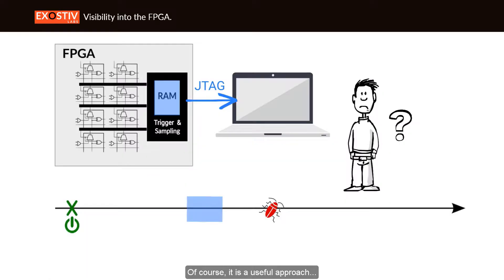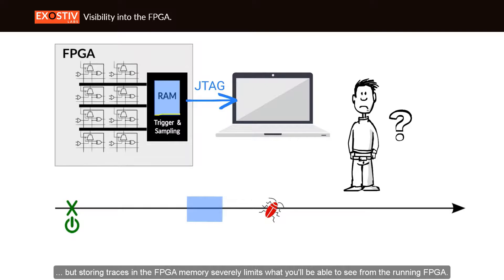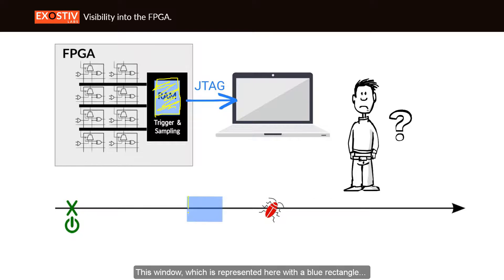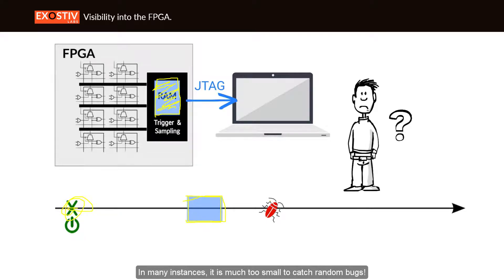Of course it is a useful approach, but storing traces in the FPGA memory severely limits what you'll be able to see from the running FPGA. The size of the storage defines your observation window. This window, represented here with a blue rectangle, is the portion of the timeline that will be captured. In many instances it is much too small to catch random bugs.